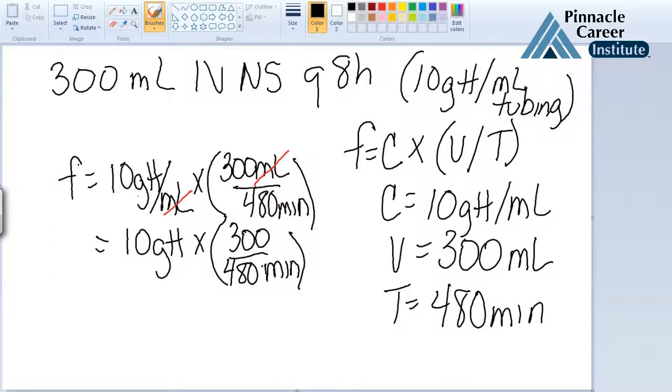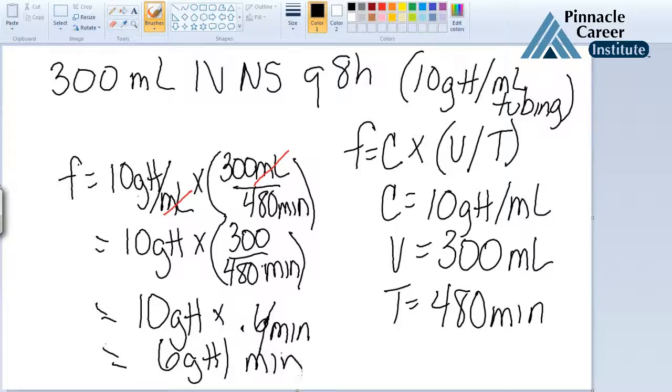You're just going to put this into a calculator. You're going to get 10 gtt times 0.6. I know that looks weird, but trust me, it's fine. So your answer is going to be 6 gtt per minute.